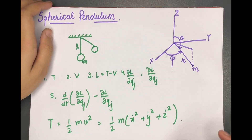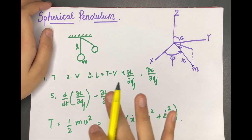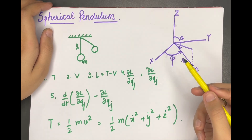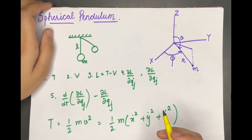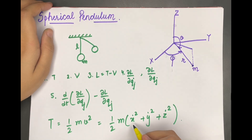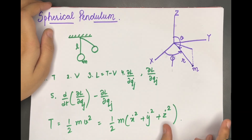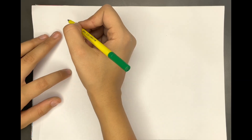Now we have to calculate kinetic energy and potential energy in terms of r, θ, and φ, and not in terms of x, y, and z. So we have to calculate ẋ², ẏ², ż² and substitute back. Let's start with the transformation equations.